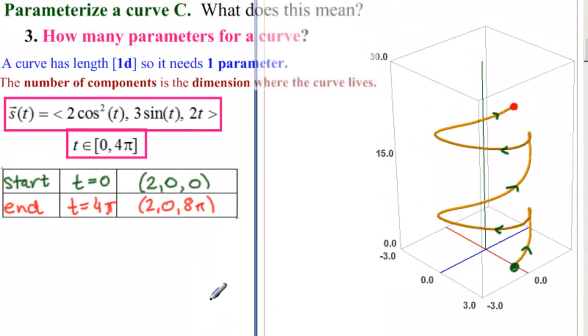So remember that a curve needs one parameter and that the number of components tells us the dimension in which the curve lives and the interval tells us its orientation.